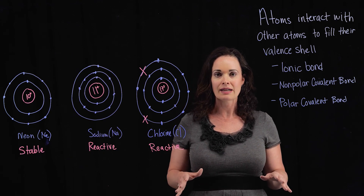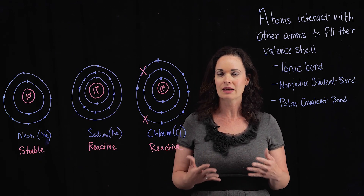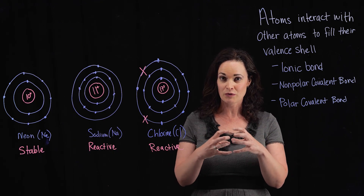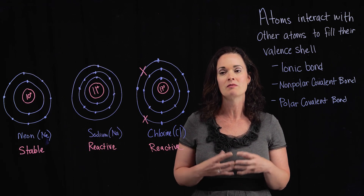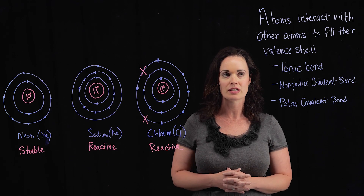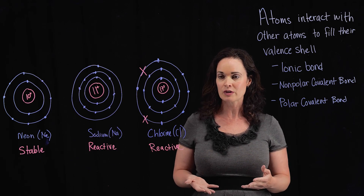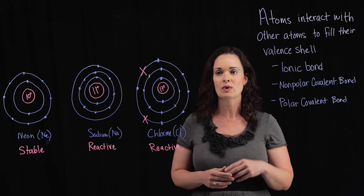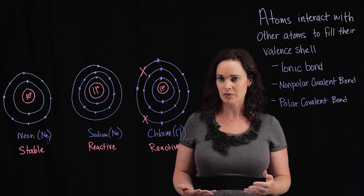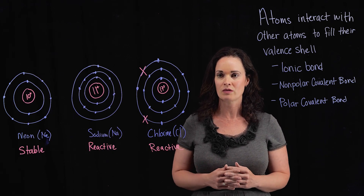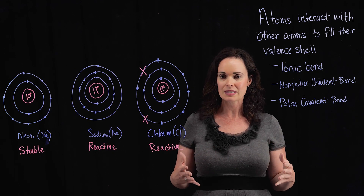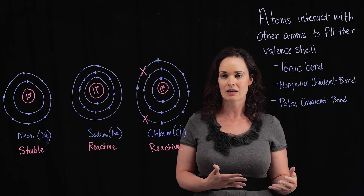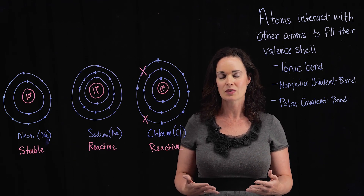Atoms are going to interact with other atoms to fill their valence shells. When they interact, they are having chemical reactions with each other, causing them to form bonds — actually becoming physically connected as they share and exchange electrons. There are a few different bond types we'll cover. This first video is dedicated to ionic bonds, and then we'll have separate videos for non-polar covalent bonds and polar covalent bonds.